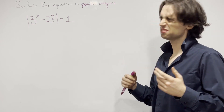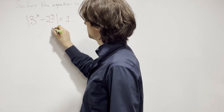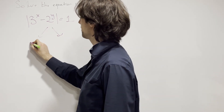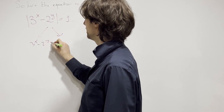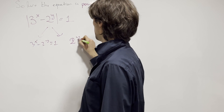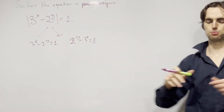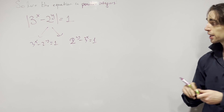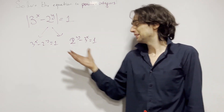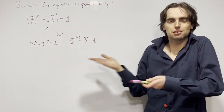Maybe the first thing to do is look at this as two separate problems. Either this is 1 or negative 1. In other words, we either have 3 to the x minus 2 to the y equals 1, or we have 2 to the y minus 3 to the x equals 1. I want to solve these as two separate problems, just because then I know what I'm dealing with. And if I solve both of these, it's still the same problem.